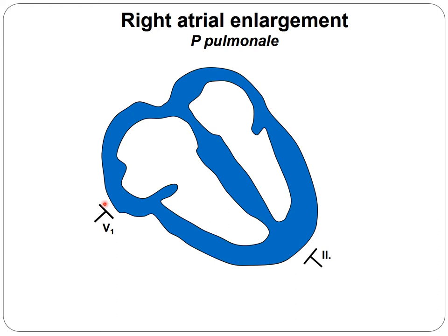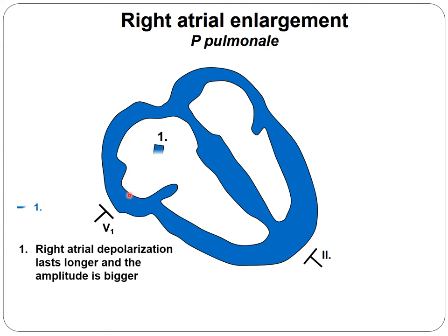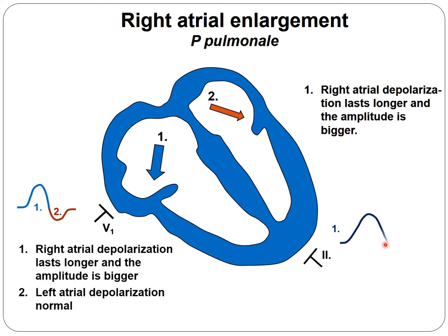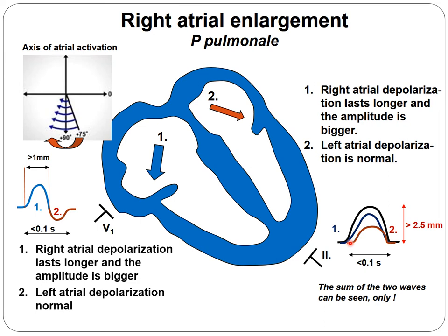When right atrial enlargement occurs, the right side gets bigger and dilates, so the right depolarization vector lasts longer and the amplitude becomes bigger. We want the first phase to be taller and wider, while the second part — the left atrium — remains normal. In lead II, the first part becomes wider and taller, while the left part that starts later and ends later becomes smaller. The overall curve won't be wider because the gap between left and right depolarization can hide the enlargement.